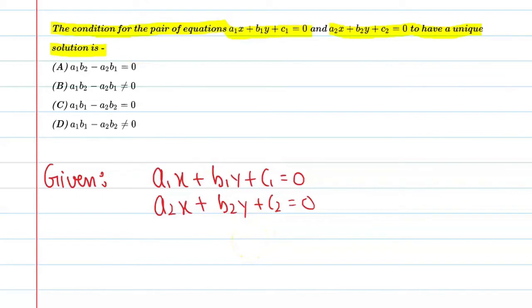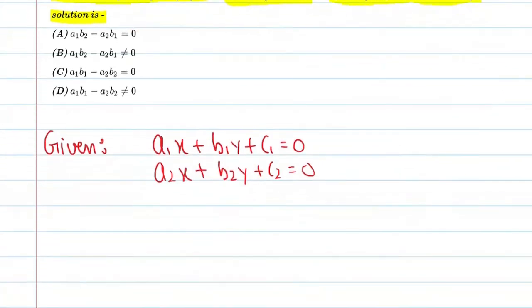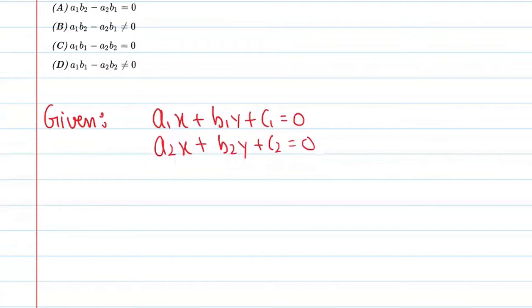All right, so the condition for unique solution is this: you can see if you take the ratios of coefficients, so a1 upon a2 should not be equal to b1 upon b2.